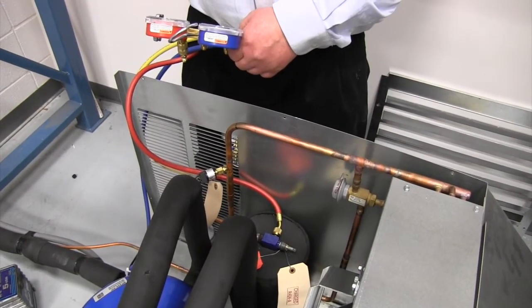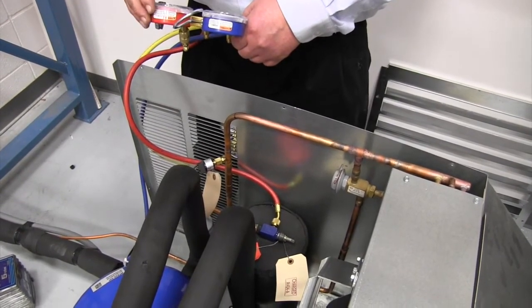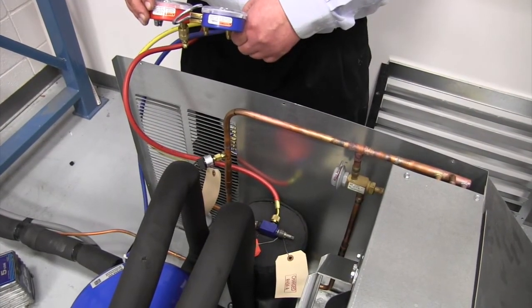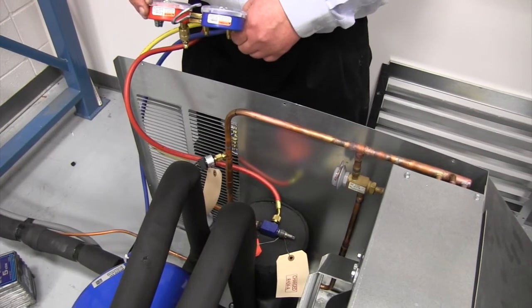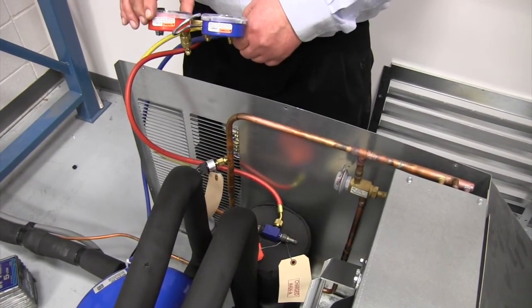The ice machine head itself comes with a holding charge of a half a pound. The outdoor condensing unit also comes with a holding charge of a half a pound. The system is a total of 14 and a half pounds. The initial charge should be 13 and a half pounds.